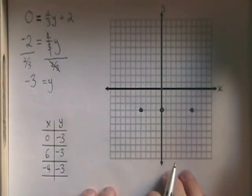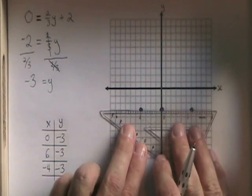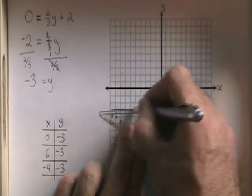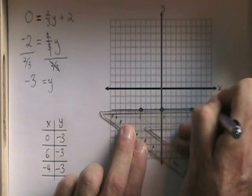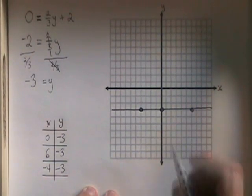We have a horizontal line with a slope of 0. I'm going to draw the line with a ruler all the way across the graph. And I'm going to label the three points that were in my table.